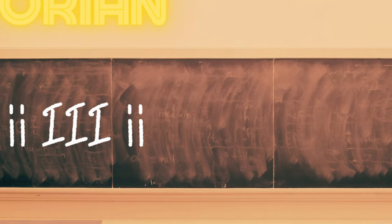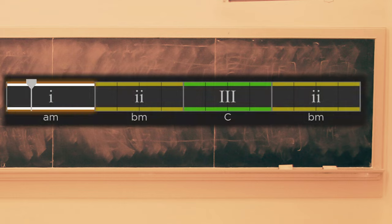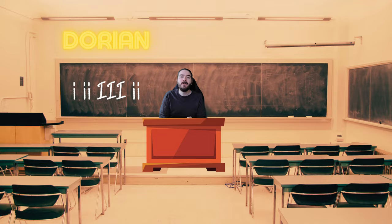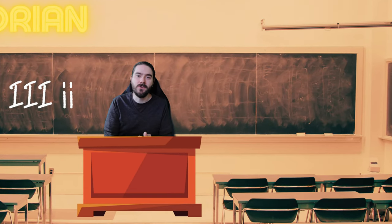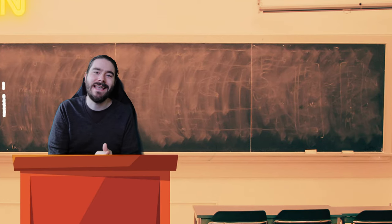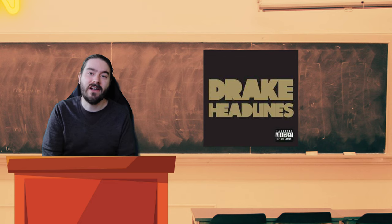Another Dorian progression now: 1-2-3-2. This progression has a rising feeling, travelling up to the 3 chord. Following this with the 2 chord again provides a melancholic step down at the end. Examples include Smooth Criminal by Michael Jackson and Headlines by Drake.